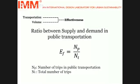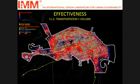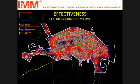Then we go to effectiveness. Effectiveness results from the superimposition of volume and transportation, and it can be defined by the classic ratio between supply and demand in public transportation — in other words, the number of trips in public transportation over the total number of trips. We again created the map of public transportation corridors, but this time we did not cut the edges, and we overlaid it onto the density map. It shows that if a transportation node in its catchment area has dense buildings, it is effective. If you put a bus or metro station in a dead void or lower-density area, it's not effective enough.